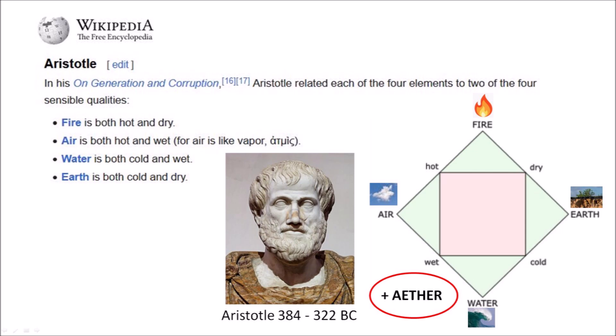Aristotle related the four classical elements — earth, water, air, and fire — to four sensible qualities: hot, cold, wet, and dry. In this scheme, all matter was made of the four elements in different proportions. But Aristotle added the heavenly ether, the divine substance of the heavenly spheres, stars, and planets.